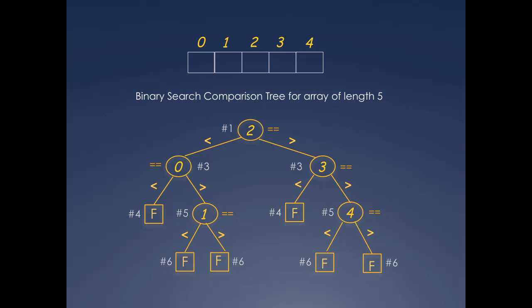Next to the failure nodes are the number of comparisons incurred in failing at the corresponding failure spots in the array. Recall that the failure spots are before the first array location, after the last array location, and all the places between any pair of array locations. You may also remember that the number of comparisons for failure is always one more than that for the immediately preceding success node in the path from the root.